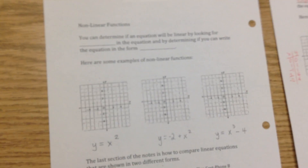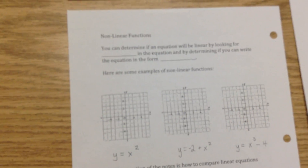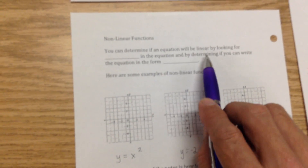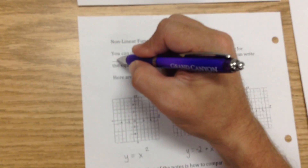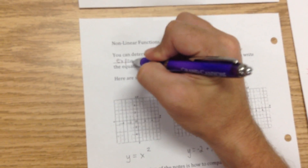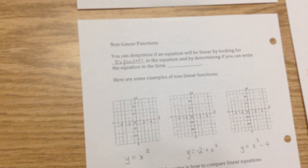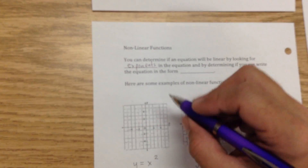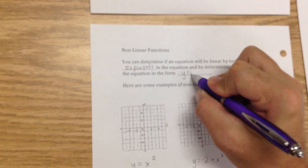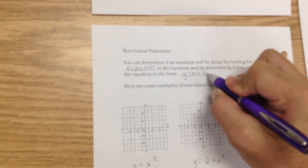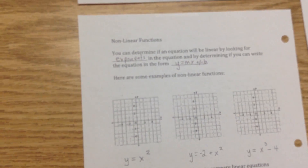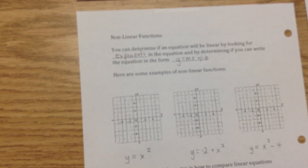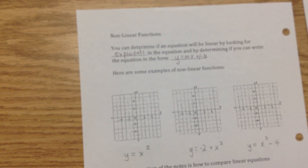Non-linear functions — now we're talking about lines that aren't straight. You can determine if an equation will be linear by looking for exponents in the equation, and also by determining if you can write the equation in the form y = mx ± b. So if you see an equation that has an exponent in it, it is not linear.